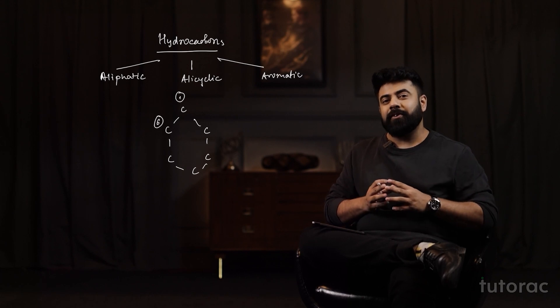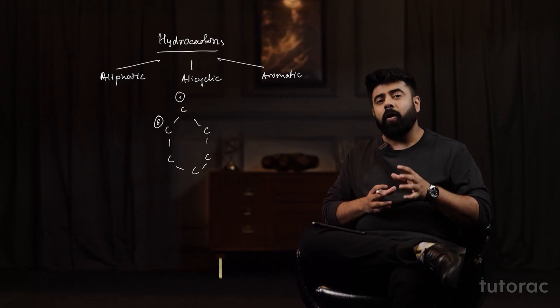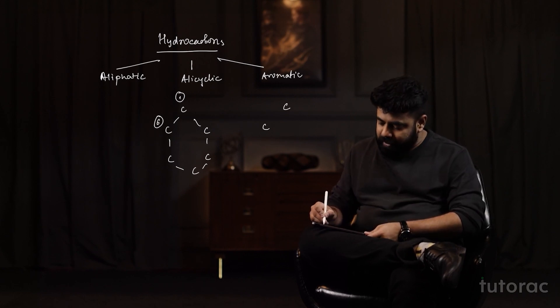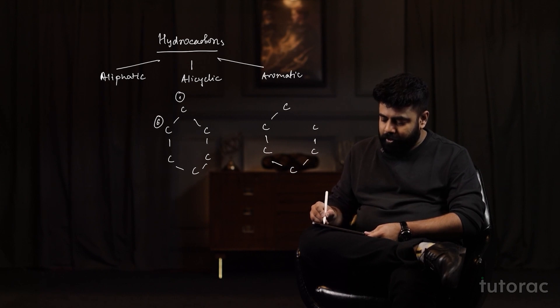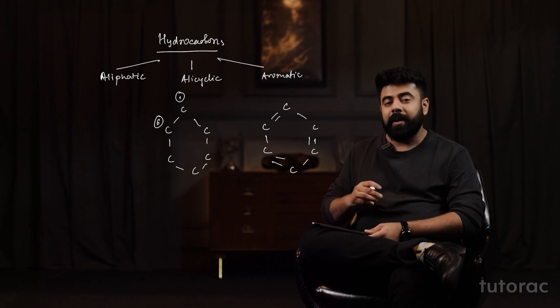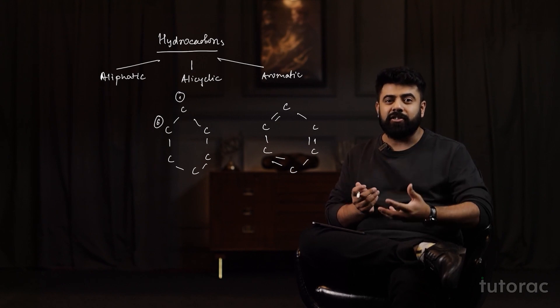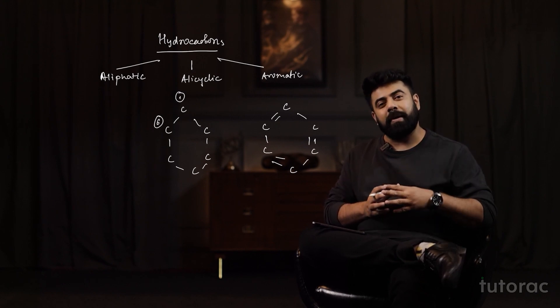Coming to the third type, which are called aromatic hydrocarbons — aromatic, as the name suggests, has a typical aroma. But other than aroma, how do we classify them structurally? They have a pi bond present. As you can see in the structure, all the bonds are sigma bonds. Now, these six carbons are bonded to each other alternately by a pi bond. Because of this pi bond, there exists a ring-like structure, and such ring-like structures are called aromatic hydrocarbons.